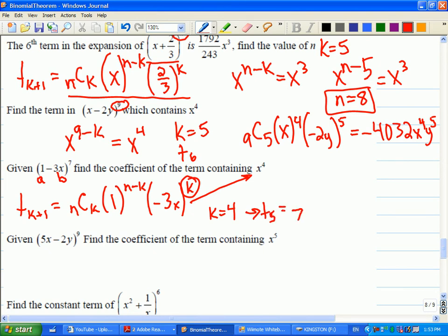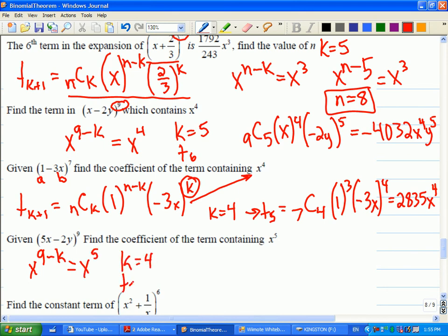Okay, so I'll let you try this next one on your own and then we'll see what we've come up with. So anybody figure out the term that we're looking for? Yeah, we're going to be looking at x to the nine minus k has to be x to the five. So k must equal four. I'm looking for term number five here.